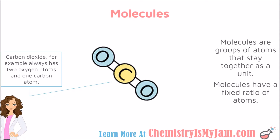One type of compound is a molecule. A molecule is a group of atoms that stays together as a unit, and it has a fixed ratio of the number of atoms present. For example, carbon dioxide will always consist of one carbon and two oxygen atoms held together by chemical bonds. If you change the ratio — say to one carbon and one oxygen — it would become carbon monoxide, a totally different compound with totally different properties. So a molecule has a fixed ratio of atoms.